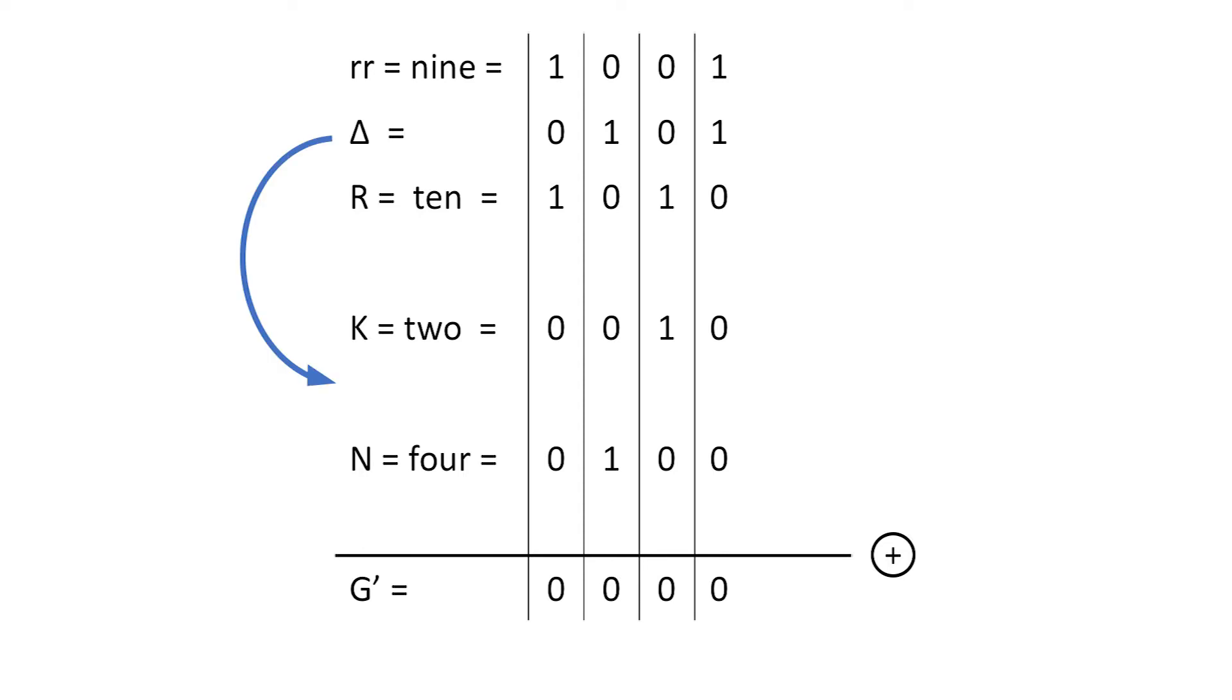If we tried adding delta into the Grundy number of the king, it would increase that number from 2 to K prime equals 7. This is also impossible.